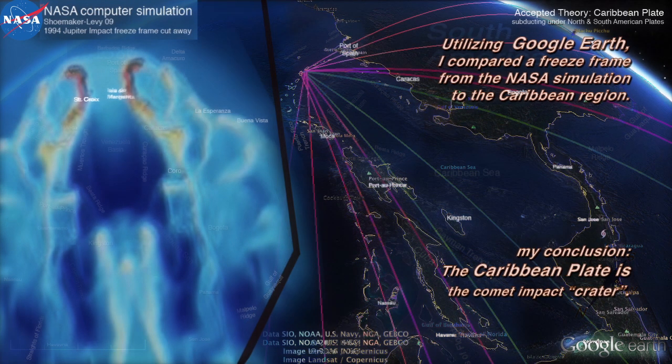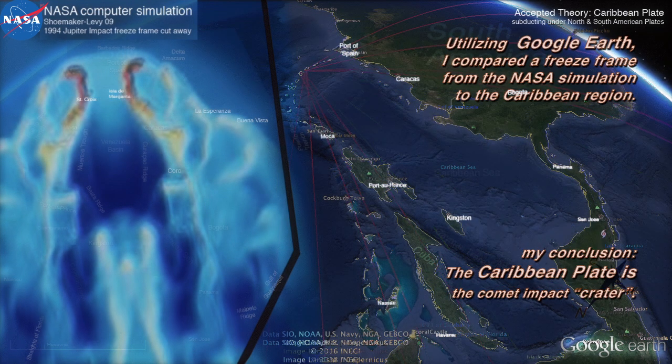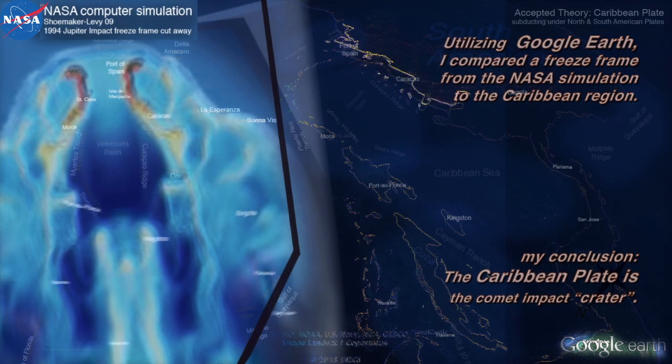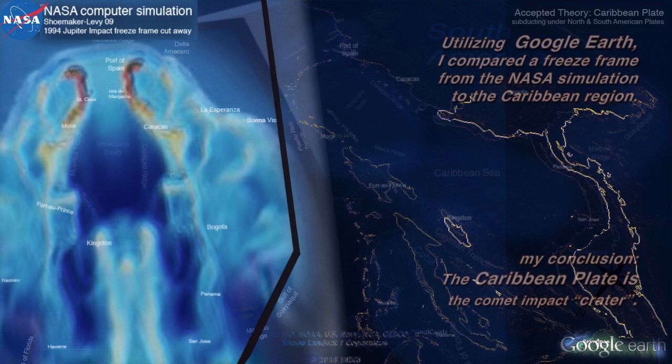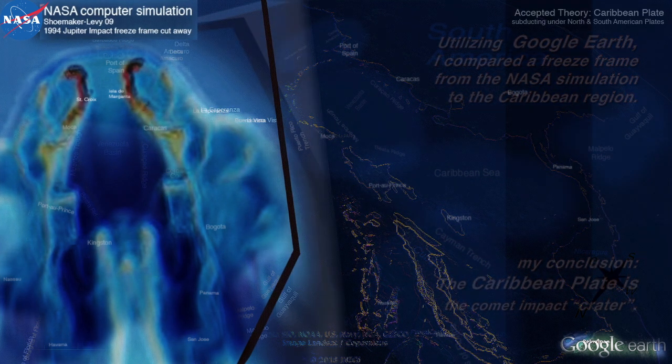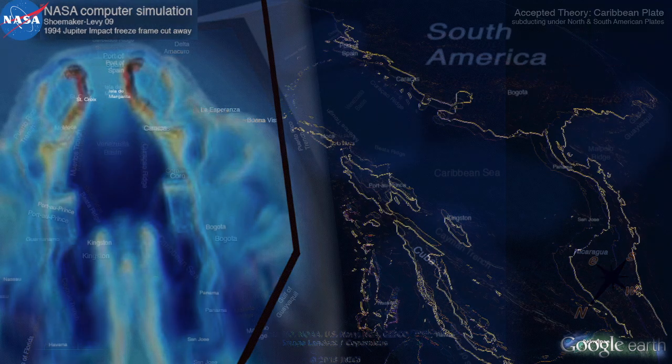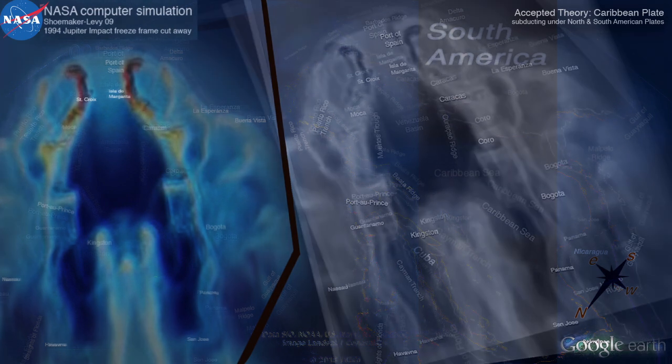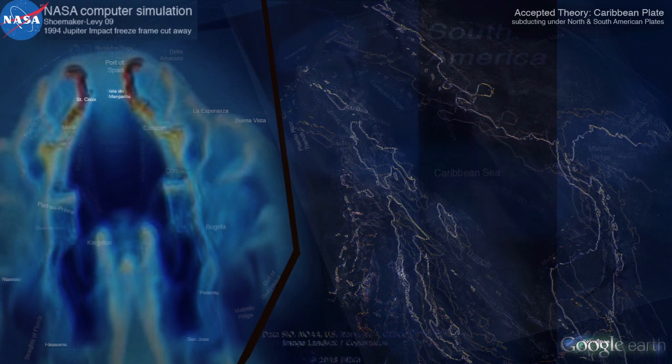I have placed a freeze frame of the simulation, and you notice that the cities line up perfectly with the same exact locations on Google Earth. All of the sea floor features can be matched in the comet simulation as well. Cuba, Panama, Puerto Rico, Haiti, Trinidad stand out.